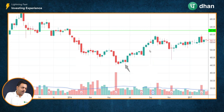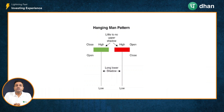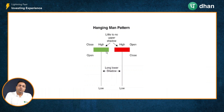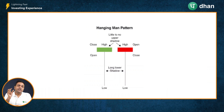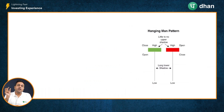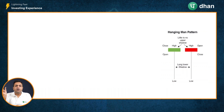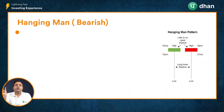Coming to the hanging man candle, which is the opposite of a hammer candle — the candle looks very much similar to what a hammer candle looks like. It is the position of this particular candle on the chart that matters. If it is appearing during a downtrend, it may indicate a temporary pause, and that is why we call it a hammer. If this candle is appearing during an uptrend, it may indicate a temporary pause in the uptrend, and that is why we call it a hanging man.